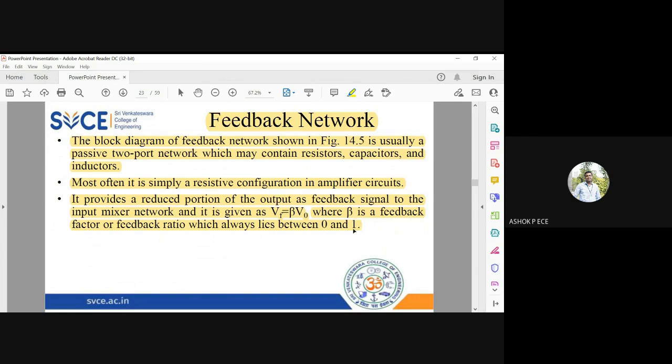The maximum value you can pass is V0 directly into your input, that is 1, or I may completely block the value of V0, which is 0. So beta will lie between 0 and 1. That's why it is called feedback factor, or feedback ratio, or feedback fraction.